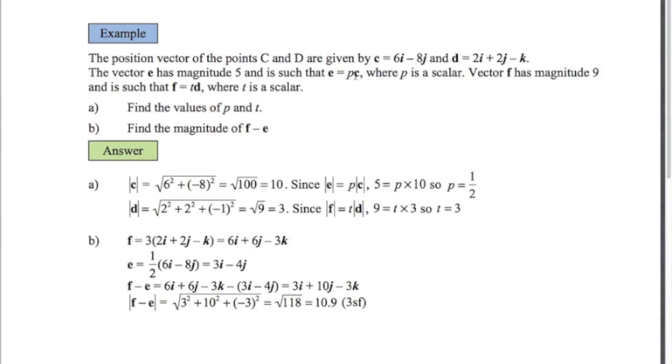If the vector e is p times c, so like 2 times c, that means e is parallel to c. It's going in the same direction. It's like twice as long, three times as long, half as long. So p is just a number here. So let's find the value of p to start with.